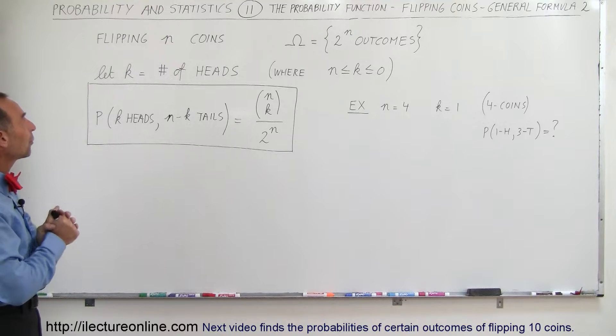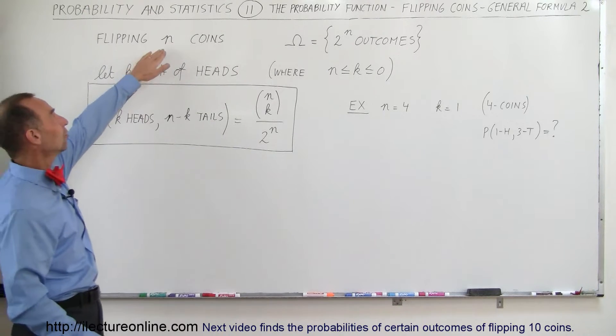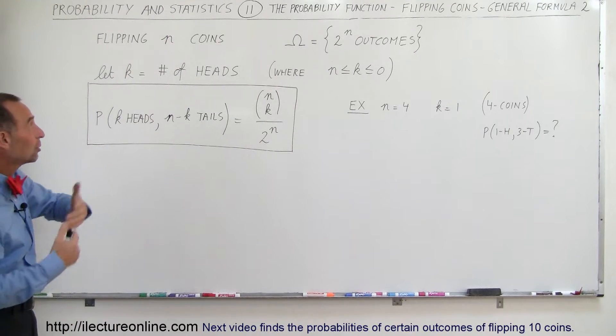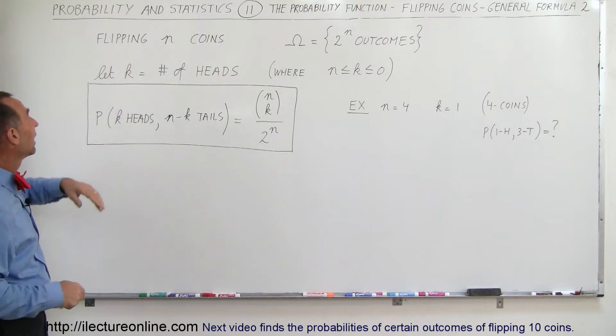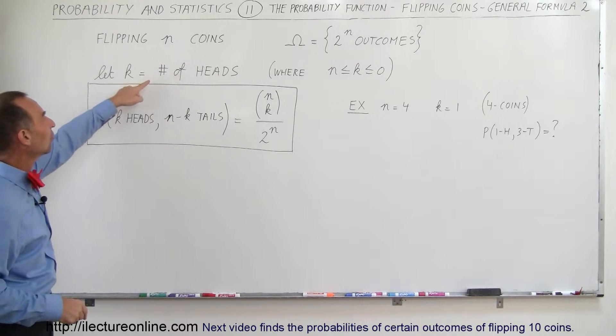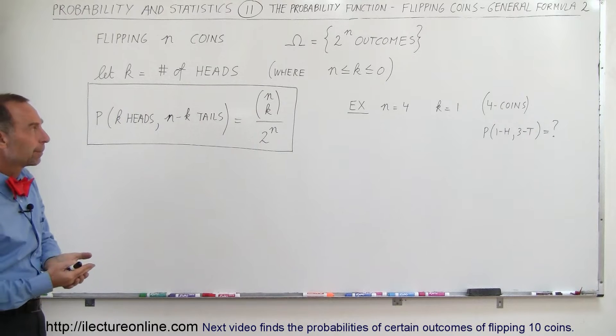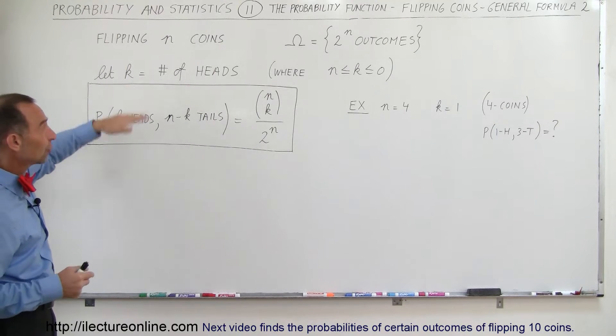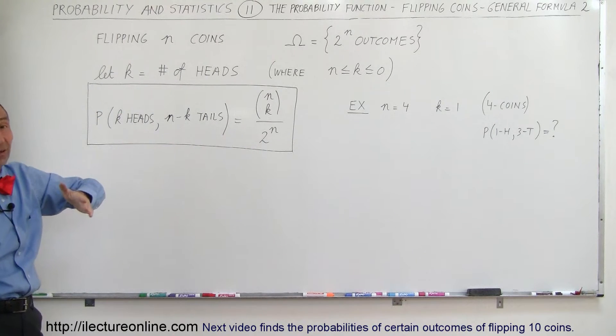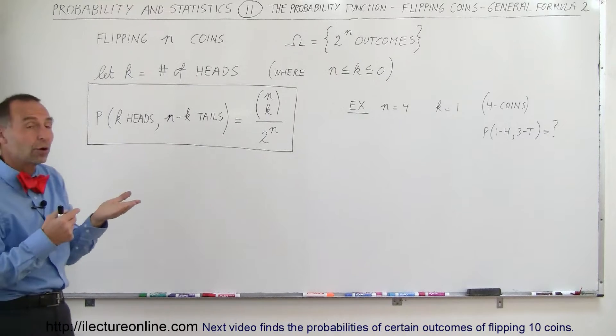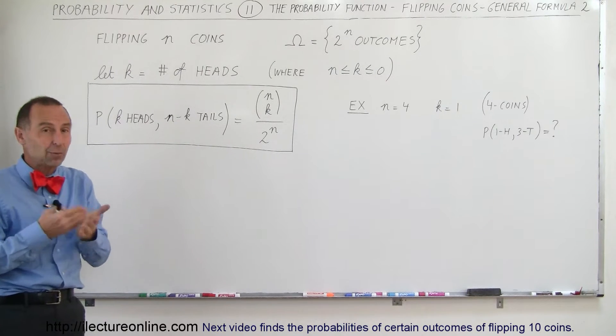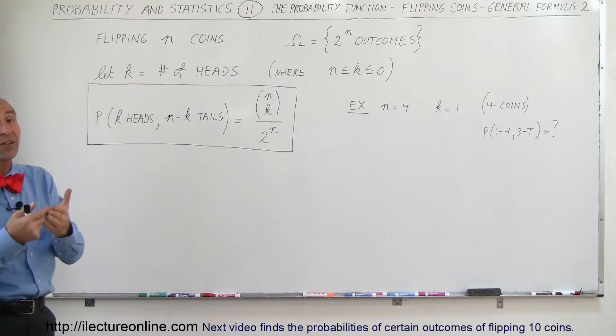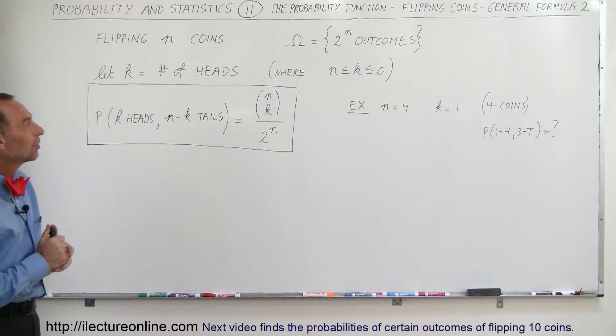Let's say that we're going to flip n coins, where n is a general number of coins - could be two, three, four, five, six coins. And let's say that k represents the number of heads in the outcome. k is of course always going to be somewhere between zero and the total number n. If you have four coins, the maximum number that k can be would be four and the minimum would be zero. Of course, all of them would be tails.